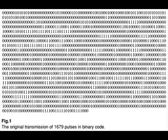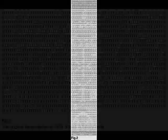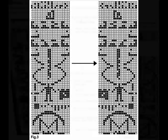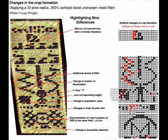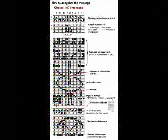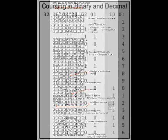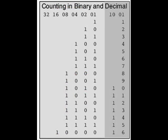The binary number system, bi-meaning two like bicycle, is a system of counting based on only two symbols represented by numbers one and zero. In this system, we count to one and we've run out of symbols so we have to go back to zero and carry the one over to the next decimal place.